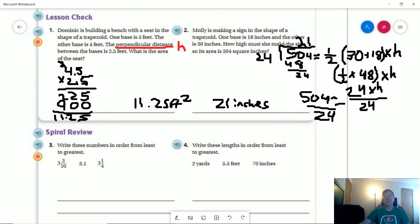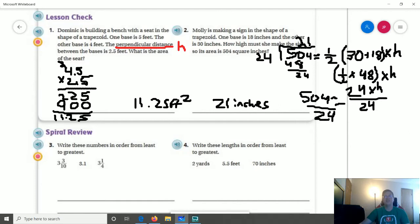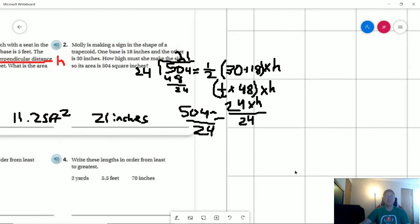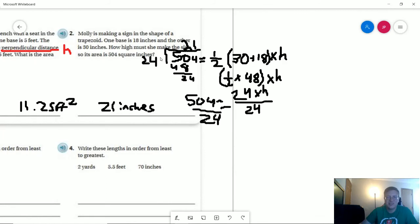Number two, we are again solving for the area. This part looks messy because I'm repurposing the same space. I started with 504, which is our area, equals 1 half of 30 plus 18 for our two bases times the height. Our total for that is 48, half of that is 24. 24 times our height, so we divide both sides by 24. That gives us 21 inches for our height.